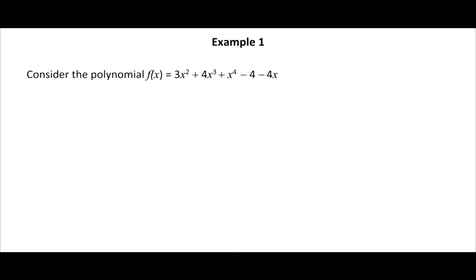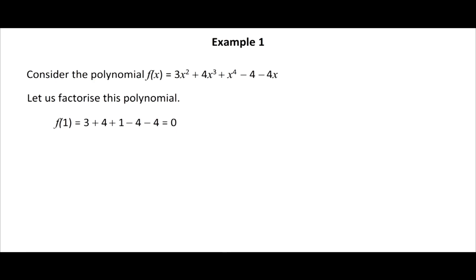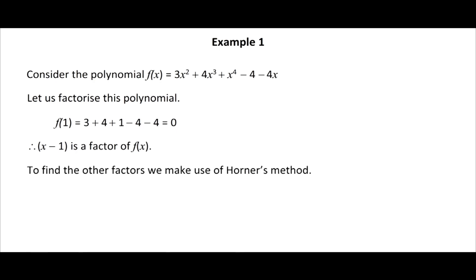Let us now see how to use Horner's method. Consider the polynomial f(x) equal to x to the power 4 plus 4x cubed plus 3x squared minus 4x minus 4. We evaluate f(1) equal to 1 plus 4 plus 3 minus 4 minus 4 equal to zero. Therefore x minus 1 is a factor of f(x). To find the other factors we make use of Horner's method.